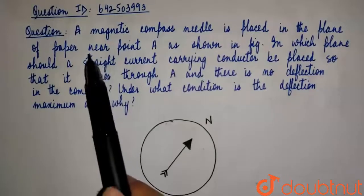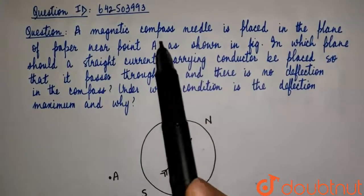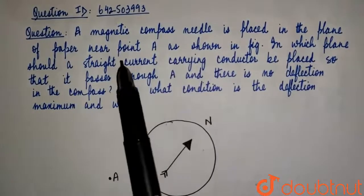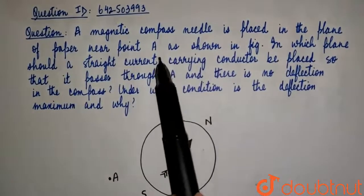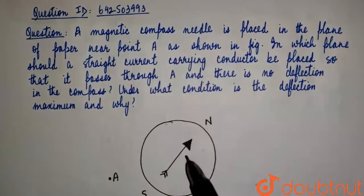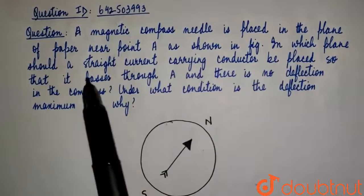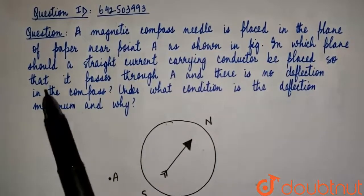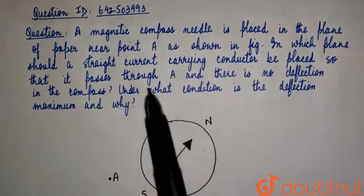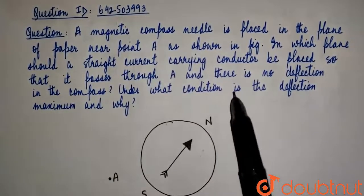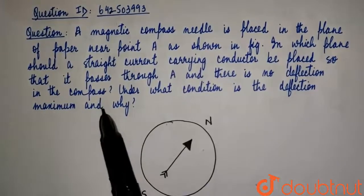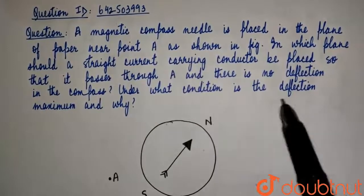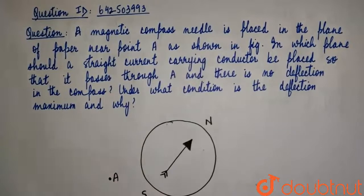We have a question that states: a magnetic compass needle is placed in the plane of paper near point A as shown in the figure. In which plane should a straight current-carrying conductor be placed so that it passes through A and there is no deflection in the compass? Under what condition is the deflection maximum and why?